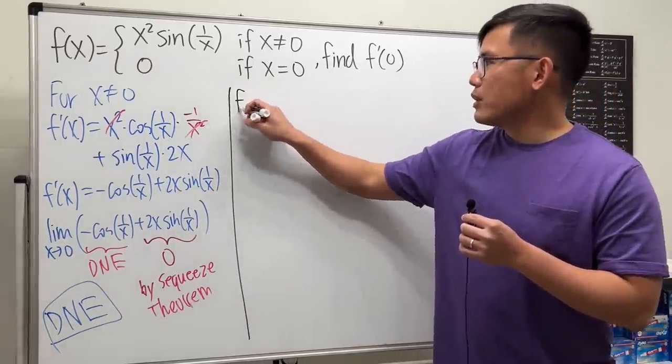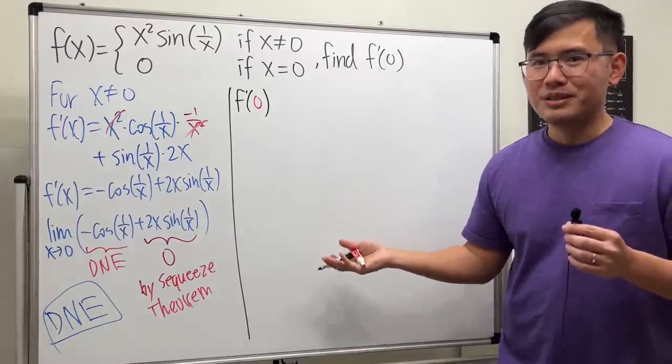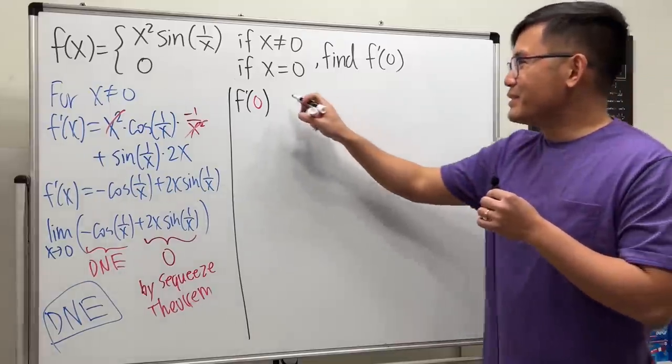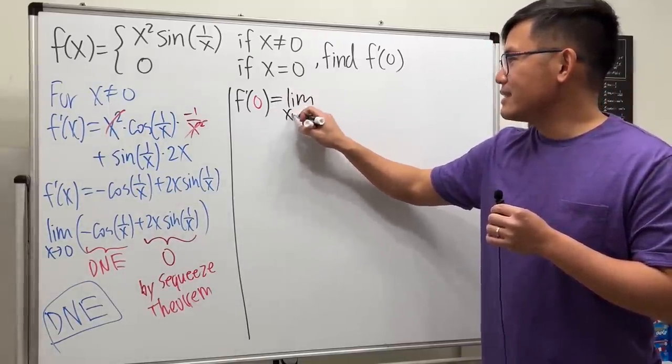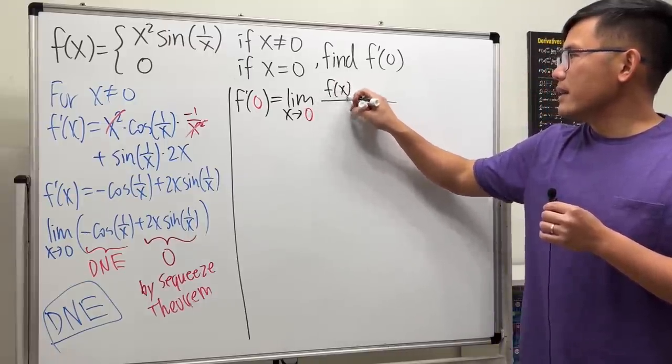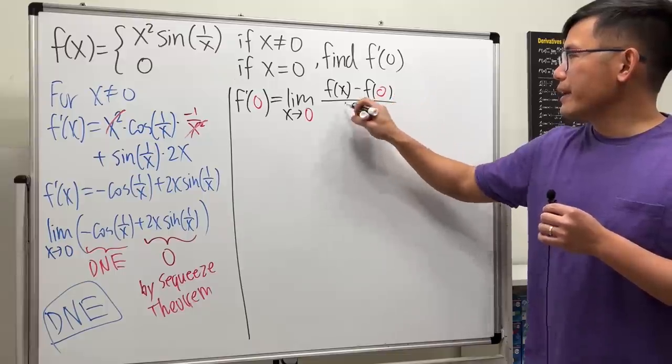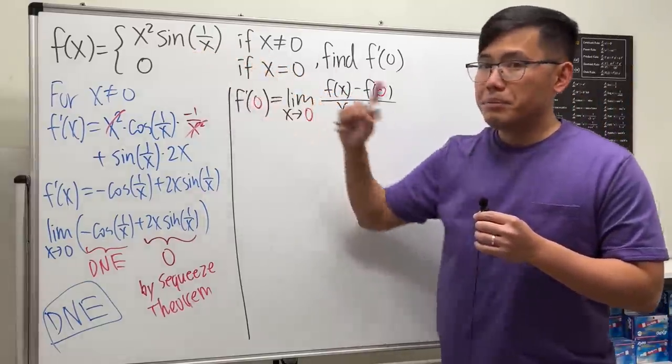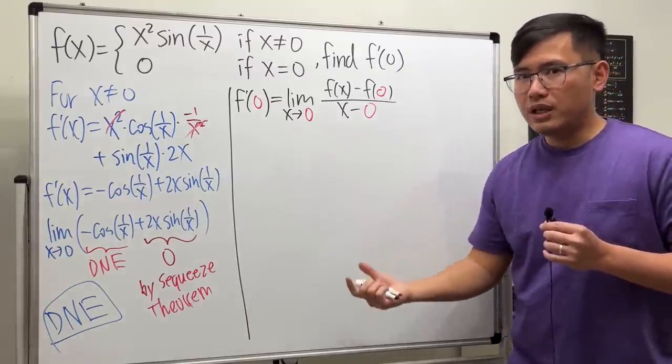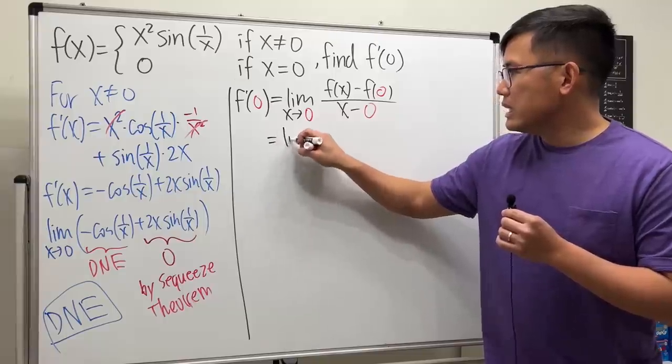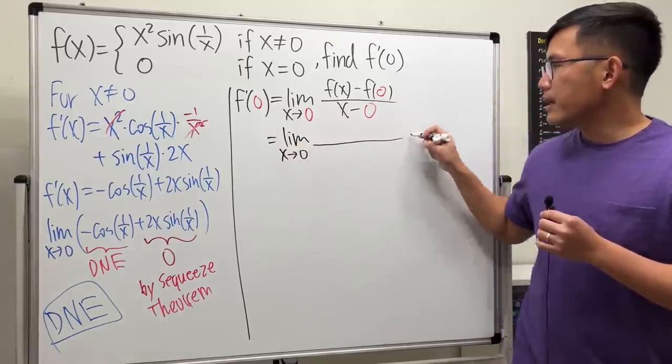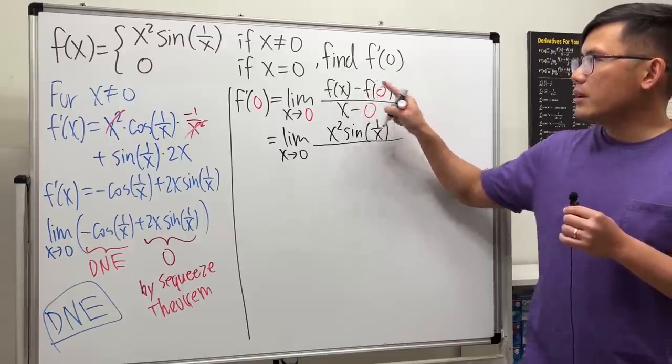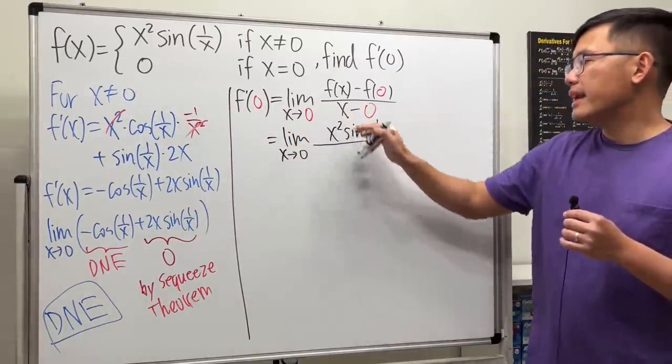To get f prime of 0, as I mentioned, we'll be using the definition of derivative. And let me just take a look right here. I'll use this one, the first one. This right here, I will say this is the limit as x approaching 0. And then we have f(x) minus f(0) over x minus 0. Keep in mind, x is approaching 0. f(x) is that. Because when we have x is approaching 0, we don't care about x is exactly at 0. So this is limit as x approaching 0. This right here is just x squared times sine of 1 over x. And this right here, by this, we get 0. So we don't need to write that down. And then on the bottom, we have x.